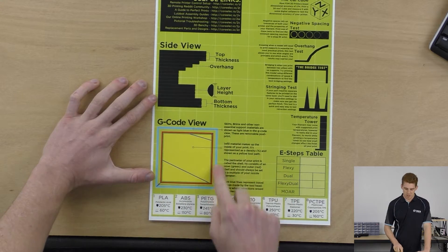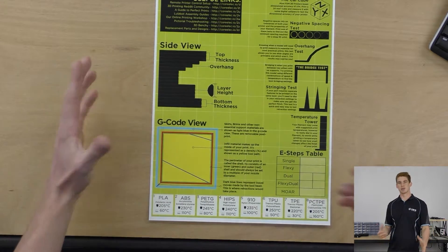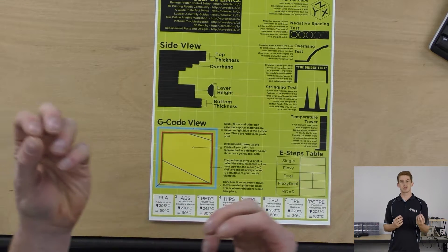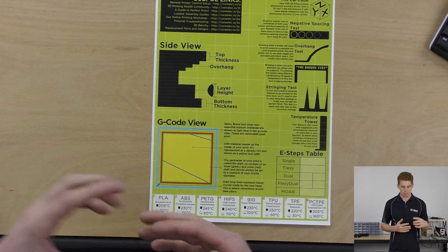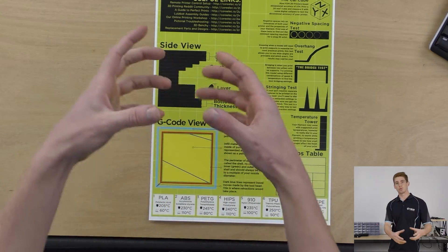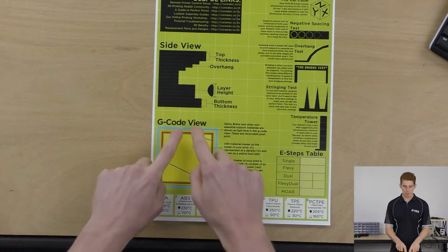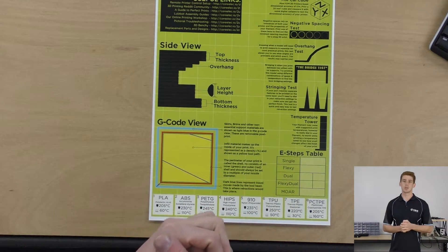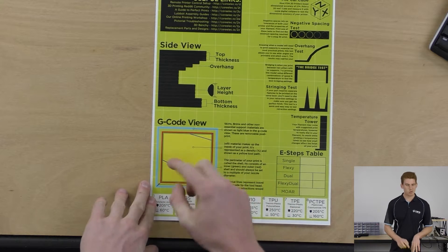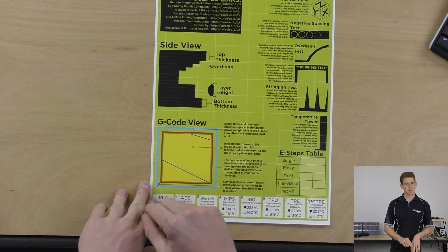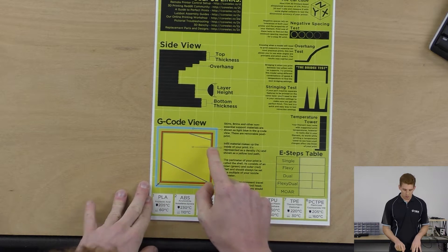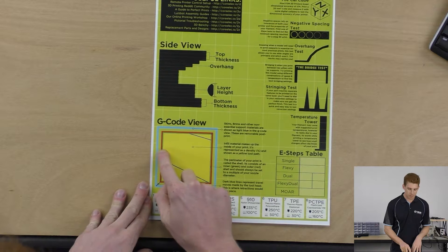The light blue sections on any of your slicer G-code views refer to the toolhead movements where it's printing removable parts. So if you're printing skirts, brims, rafts, supports, anything that you will remove at the end of the print, it will actually appear as a light blue color in the G-code view. Next up, you've got the infill material which we just went over, which is the yellow stuff in the center. Like I said, this is representing a solid print.